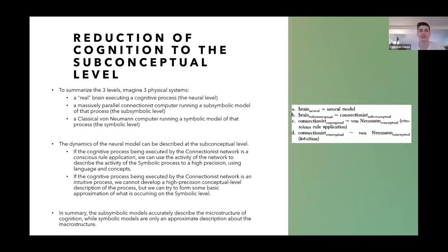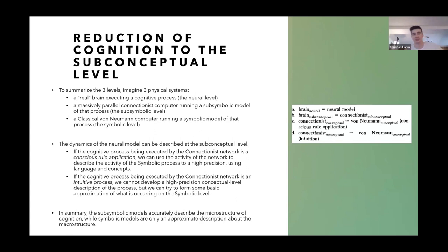If the connectionist network is carrying out a conscious rule application, we can use the activity of the network and try to approximate what the system is doing using language and concepts. Consider, for example, measuring brain activity — there are experiments where they read your mind using neural activity, like if you're thinking about certain words they can try to decode that using deep learning techniques. That's kind of what they're saying here.